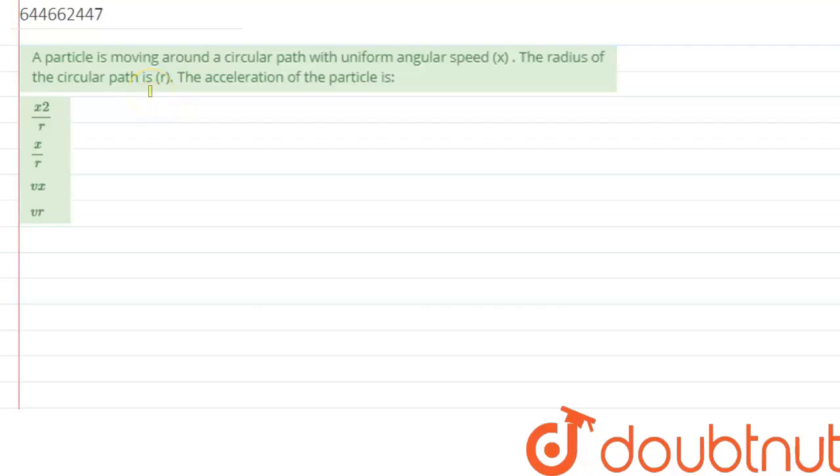So we are given with a question which says a particle is moving around a circular path with uniform angular speed x. The radius of the circular path is r. We need to calculate the acceleration of the particle.